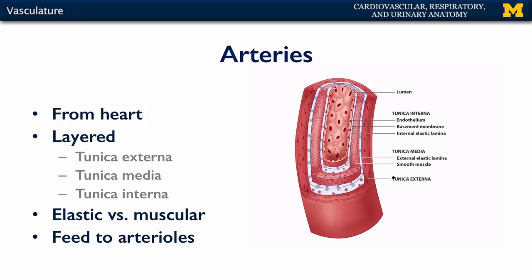There's the tunica externa, tunica media, and deep, the tunica interna. The tunica externa of the artery is the outermost layer that consists of collagen and other connective tissues. The tunica media in an artery consists of layers of smooth muscle, which can be quite variable with respect to the number of layers, and then an external elastic lamina, which provides a little bit of tone to the vessel. The tunica interna consists of a layer of simple squamous epithelium, supported by a basement membrane, surrounded by an internal elastic lamina. Together these three layers provide the vessel with enough support, tone, and elasticity to move blood away from the heart so that it may be delivered to those metabolically active tissues.